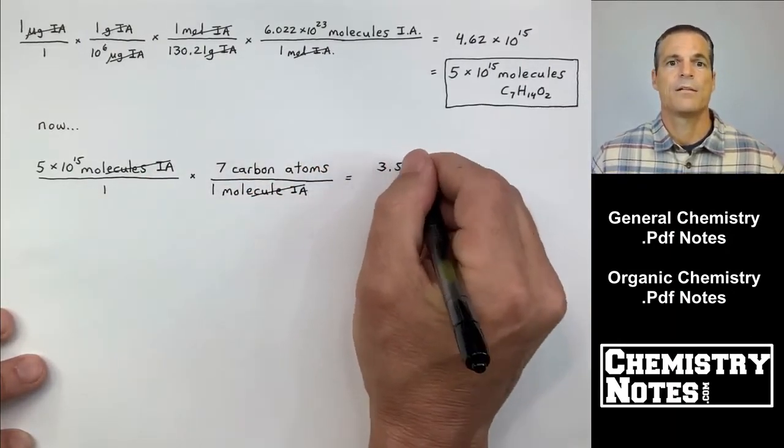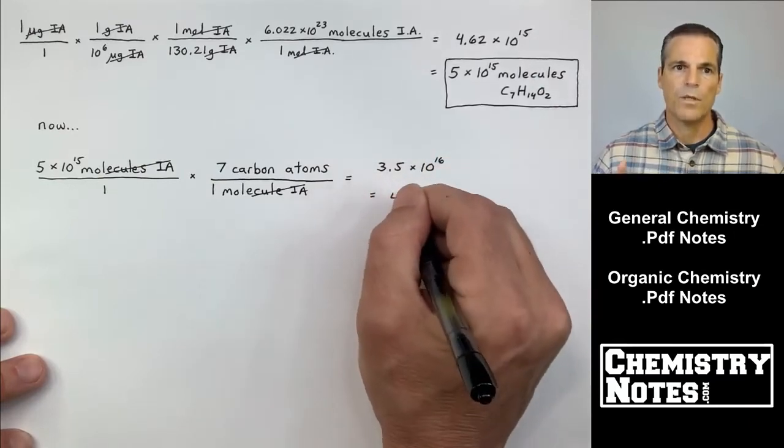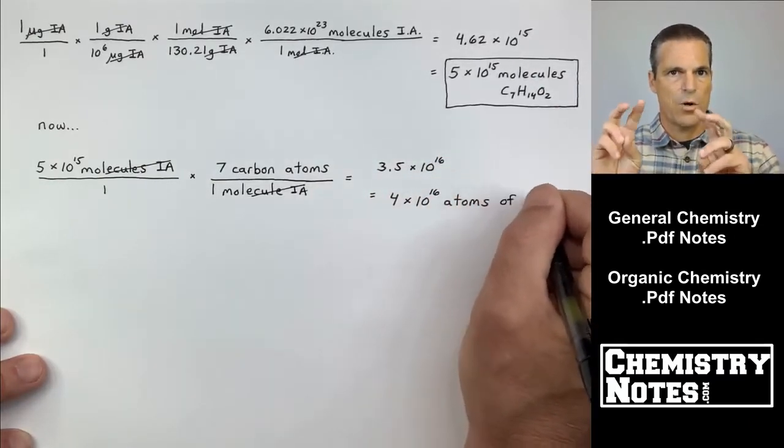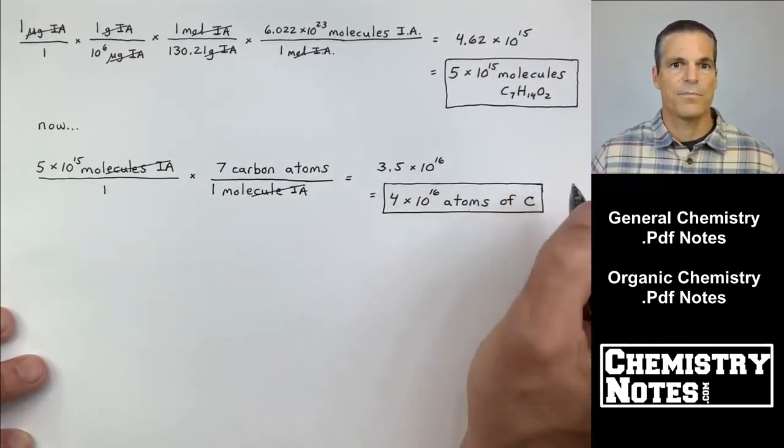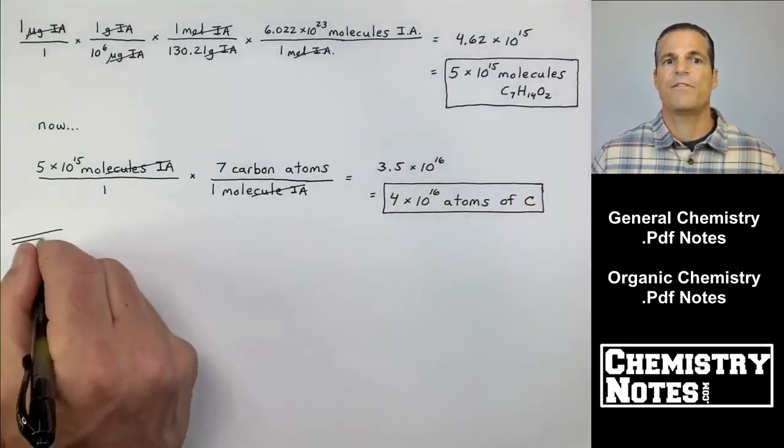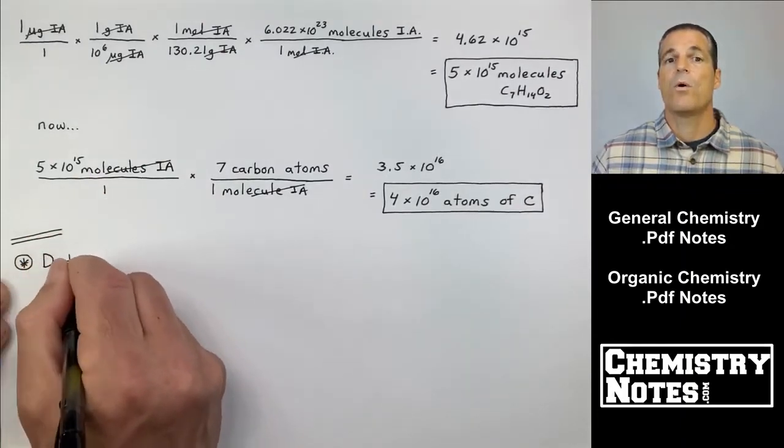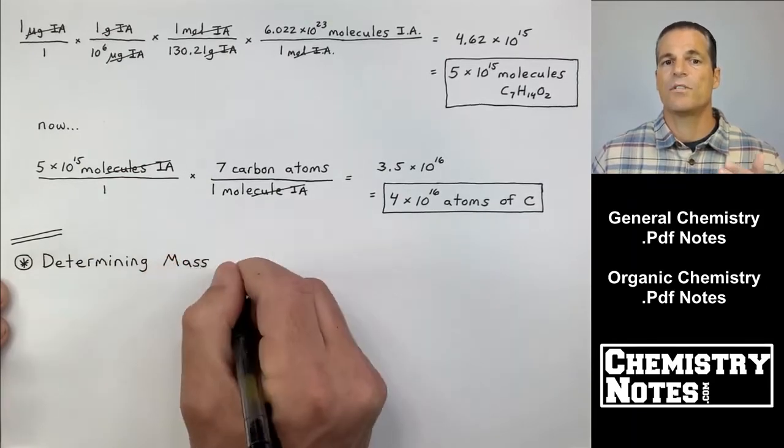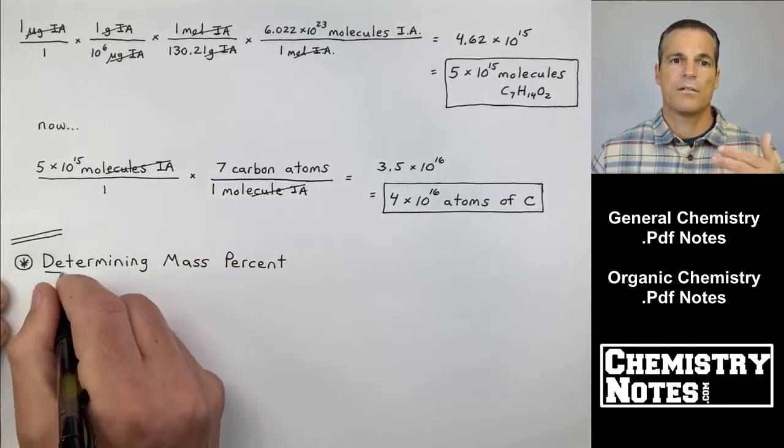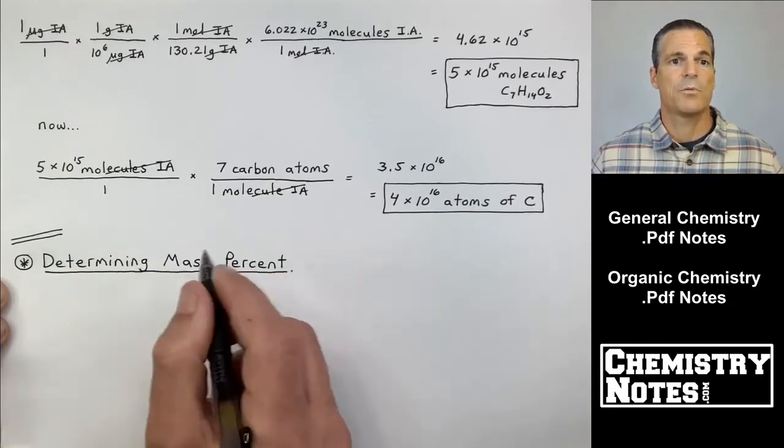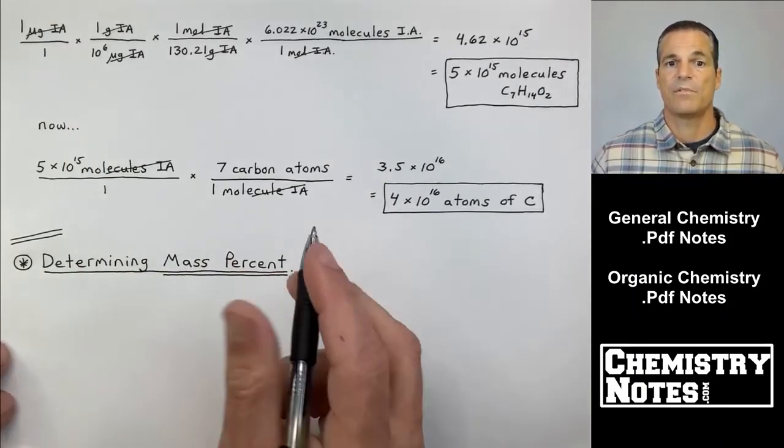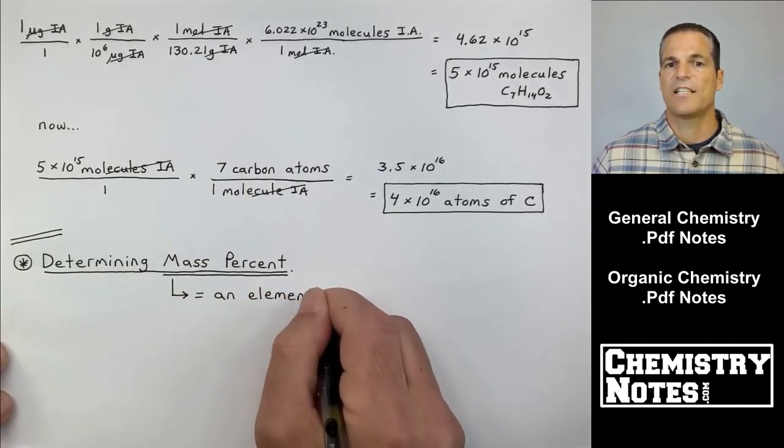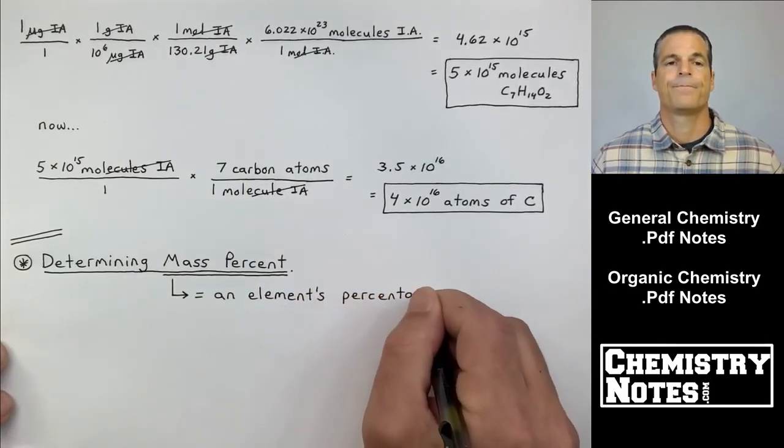Okay, now to do the second half of the question, we start with what we're given and put it over one. This time we're kind of quote given our answer from the first part: five times 10 to the 15th molecules of IA. Well, one molecule of C7H14O2, look at C7, contains seven carbon atoms. You just multiply our answer from above times seven, apply proper significant figures, and it's four times 10 to the 16th atoms of carbon.